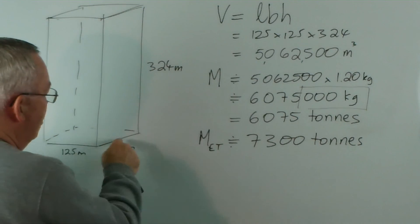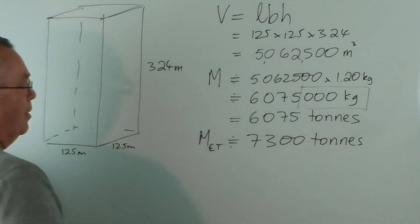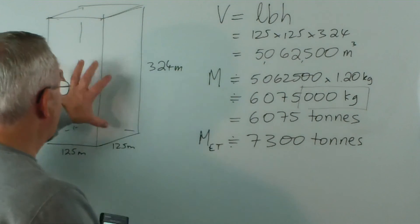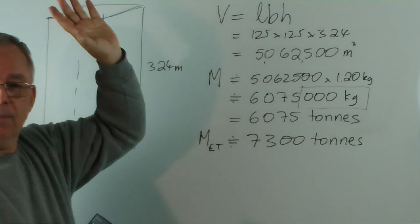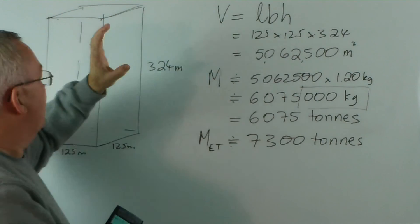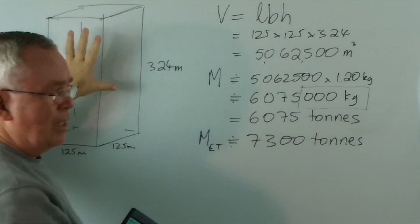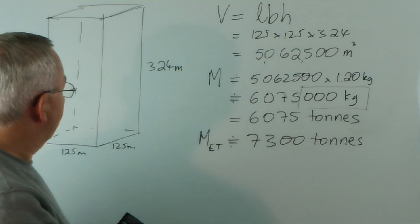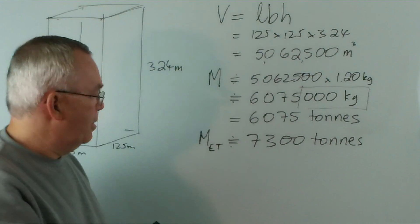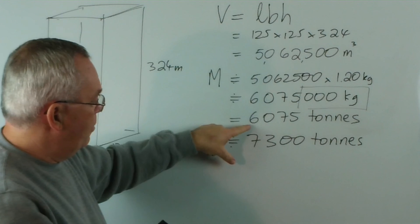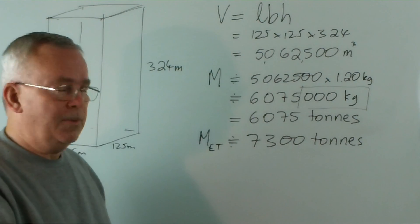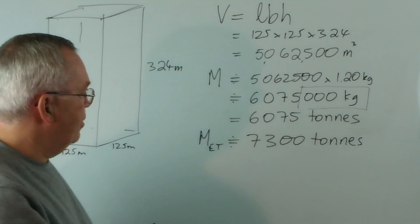If you could put a box around the Eiffel Tower and pump all the air out — all of it — you would almost generate enough lift to lift the tower off the ground. We're 1,300 tons short. But we're a large percentage of the way there.